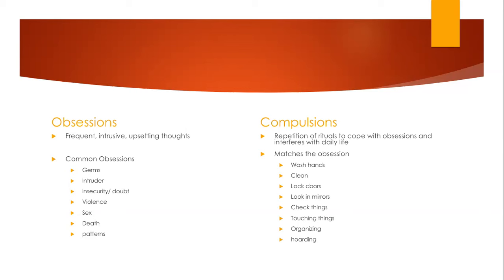Compulsions, on the other hand, are repetitive behaviors that are performed in a ritualistic fashion with the goal of preventing or relieving the anxiety and distress caused by the obsessive thoughts. The obsession is the thoughts that the individual is having that's causing anxiety, whereas the compulsion is the action they do to try and reduce the obsessions.